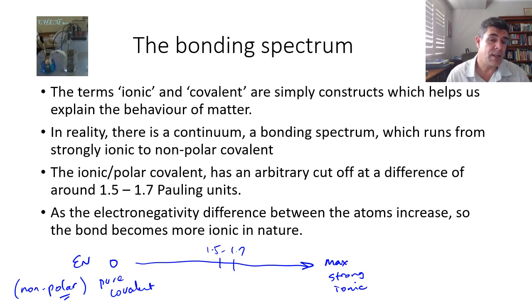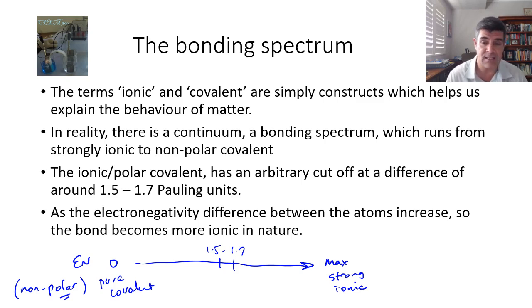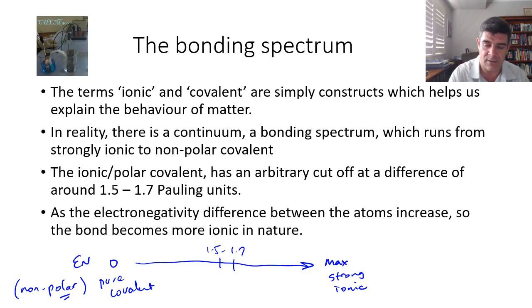The key point here is that as the electronegativity difference between two atoms increases, the bond becomes more ionic in nature. And conversely, as the electronegativity difference between the atoms decreases, it becomes more covalent.